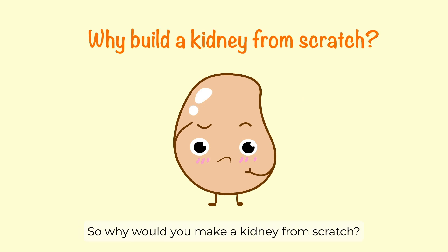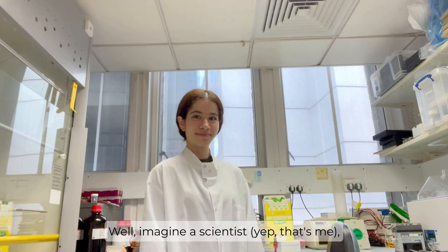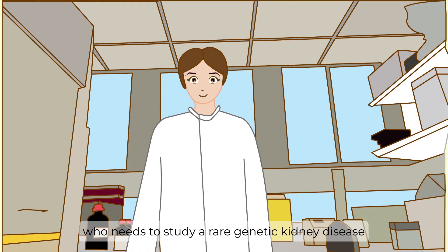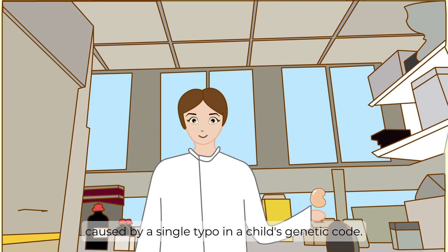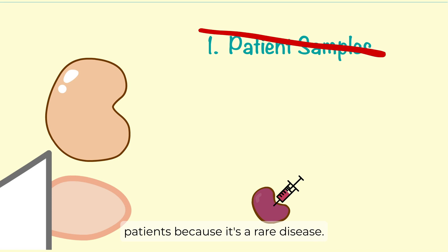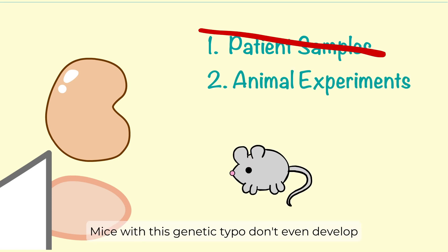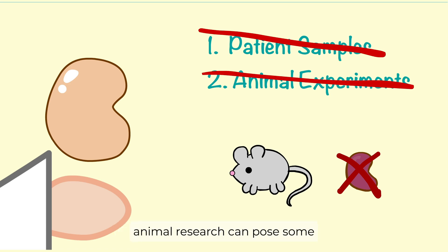So why would you make a kidney from scratch? Imagine a scientist — that's me — who needs to study a rare genetic kidney disease caused by a single typo in a child's genetic code. She can't get samples to study from the patients because it's a rare disease. Mice with this genetic typo don't even develop to the stage where they have kidneys, so that's not a good model. Plus, animal research can pose some ethical issues as well.